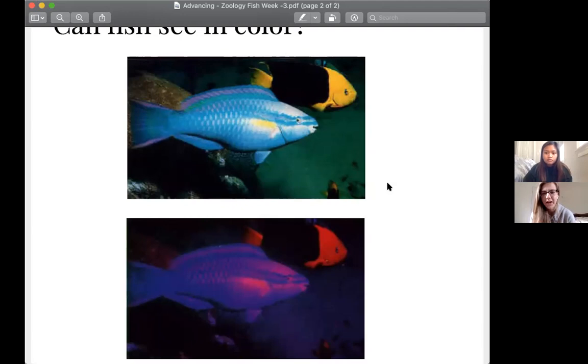So for example, some fish may have color vision that is more skewed for one part of the light spectrum than another. Like, for example, in the second picture here, some fish may see reds and purples more prominently than other colors, whereas other fish might see blues and greens more prominently.